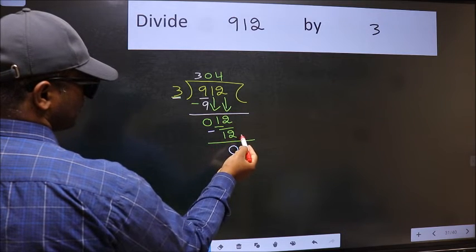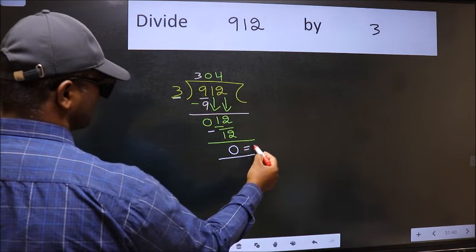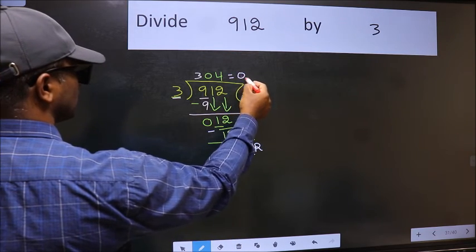No more numbers to bring down. So we stop here. This is our remainder and this is our quotient.